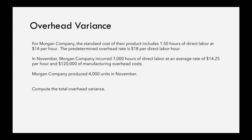In November, Morgan Company incurred 7,000 hours of direct labor at an average rate of $14.25 per hour and $120,000 of manufacturing overhead costs. Morgan Company produced 4,000 units in November.